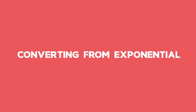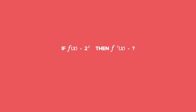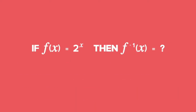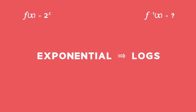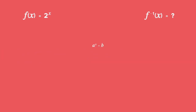Example 1: Converting from exponential to log form. If f of x is equal to 2 to the power of x, then find f inverse of x. Recall how to change from exponential to log form: if a to the power of x equals b, we can write the equation in log form as x equals log b base a.